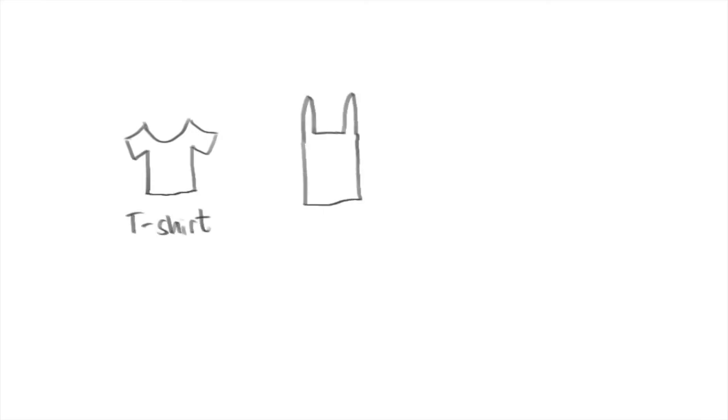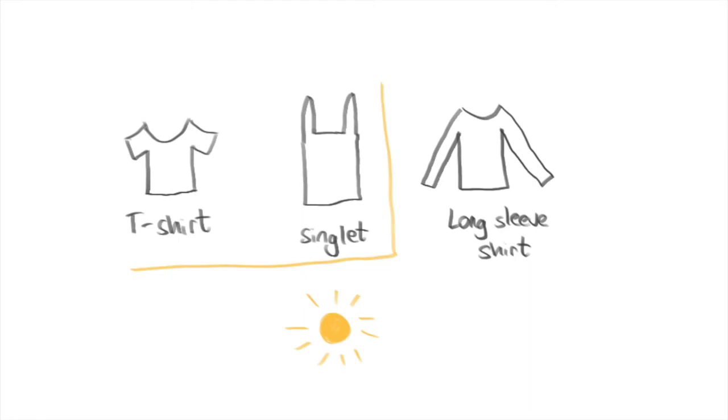Now how do you decide whether you need t-shirts, singlets, or long sleeve shirts? You're probably going to check the destination you're going to. If the destination is going to be hot you'll probably prioritize t-shirts and singlets. If the destination is cold you'll probably prioritize long sleeve shirts. In the same way you'll need to train your neural net on what it needs to prioritize for you by using weights.